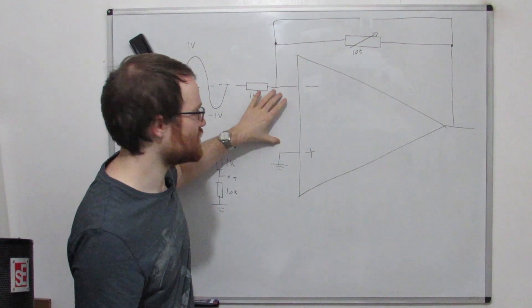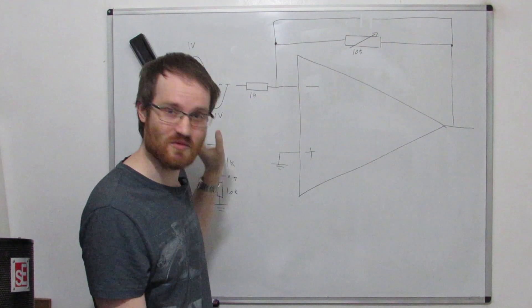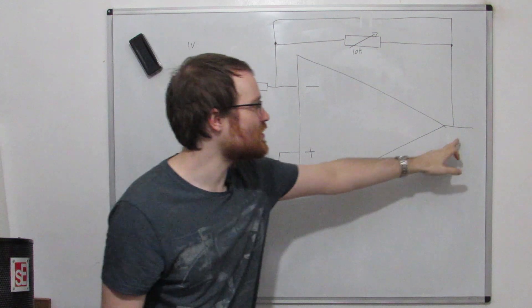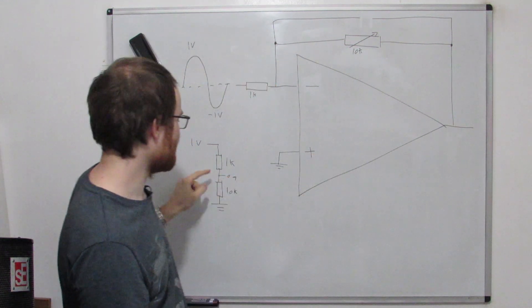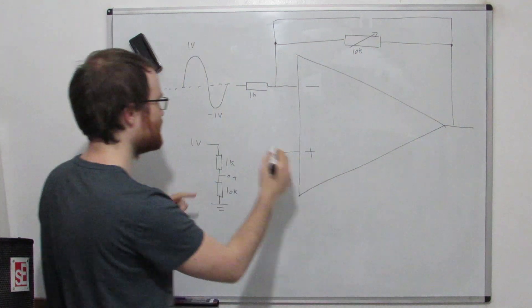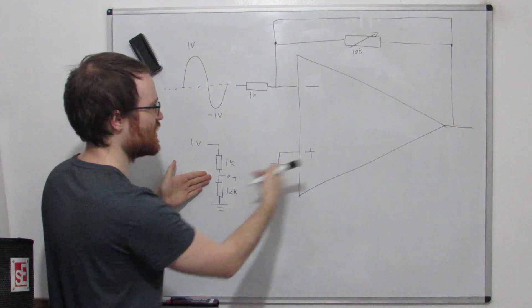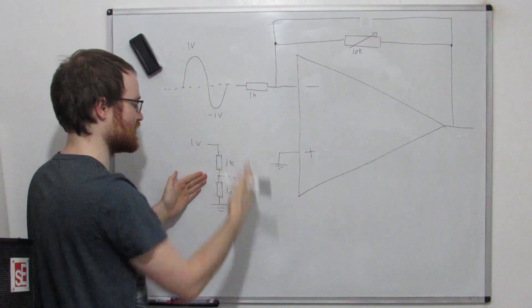The op-amp now is going to try and make these two inputs equal, because this input's at ground, remember? This is exactly the same as what we've just done. So now what does the output of the op-amp have to do to make this point zero? Well the op-amp has to put minus 0.9 volts here,